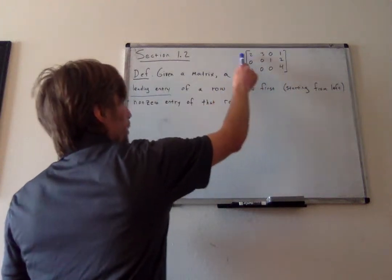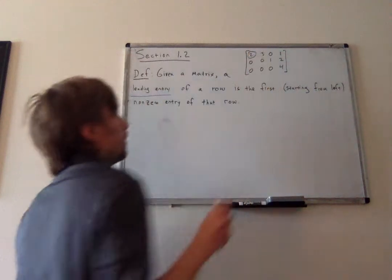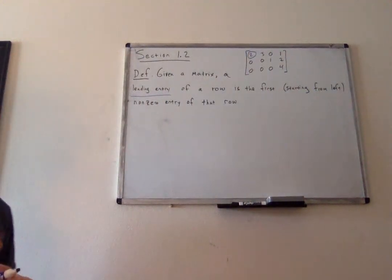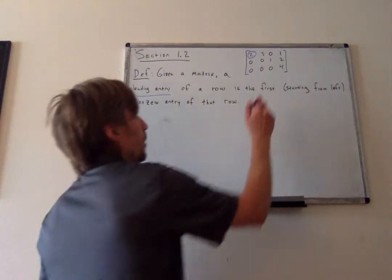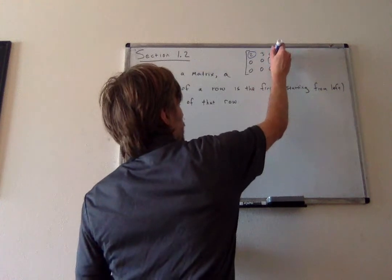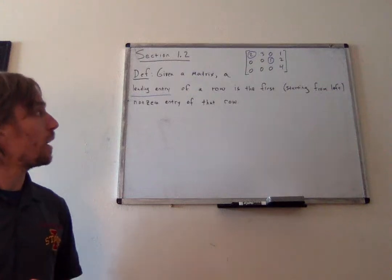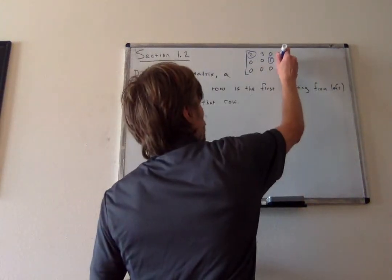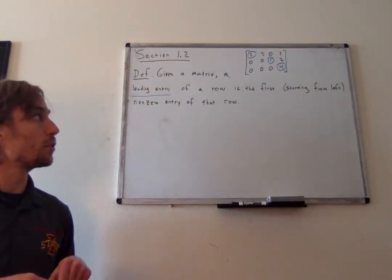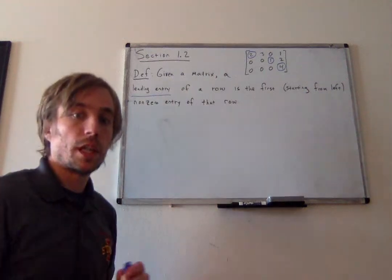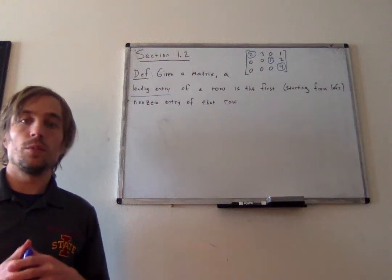Starting from the left, if I look at row 1, 2 is a leading entry in row 1 because it is the first non-zero entry of that row. Going down to row 2, 1 would be the leading entry because it is the first non-zero entry in row 2. And in row 3, 4 would be our leading entry. Starting from the left in each row and working your way right, you can find the leading entries by circling the first non-zero number you see.